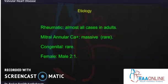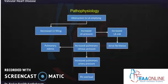Almost all cases of mitral stenosis are rheumatic in origin. The valve is usually calcified, but massive calcification is quite rare. Congenital mitral stenosis is also rare, and other etiologies such as mitral annular calcification are likewise quite rare. The female to male ratio is two to one in mitral stenosis.